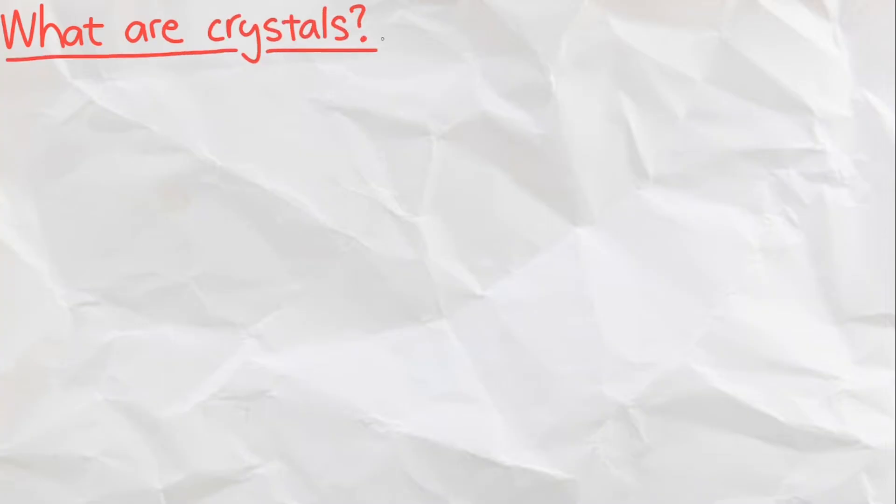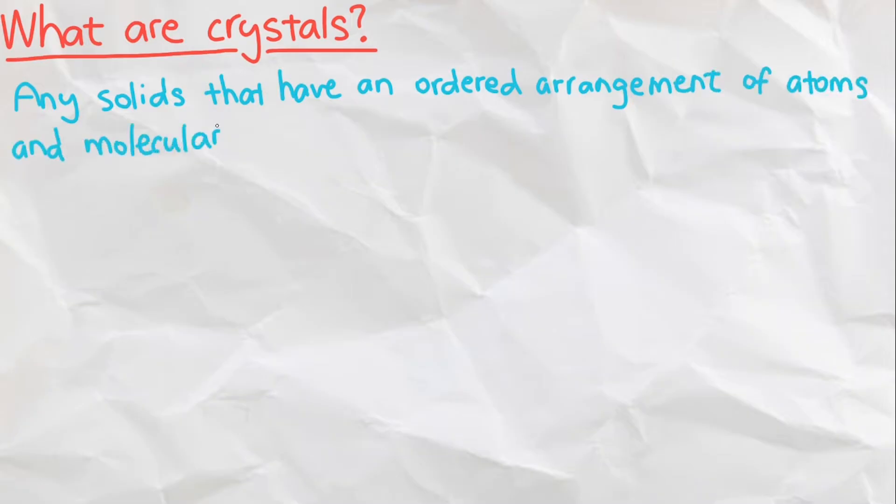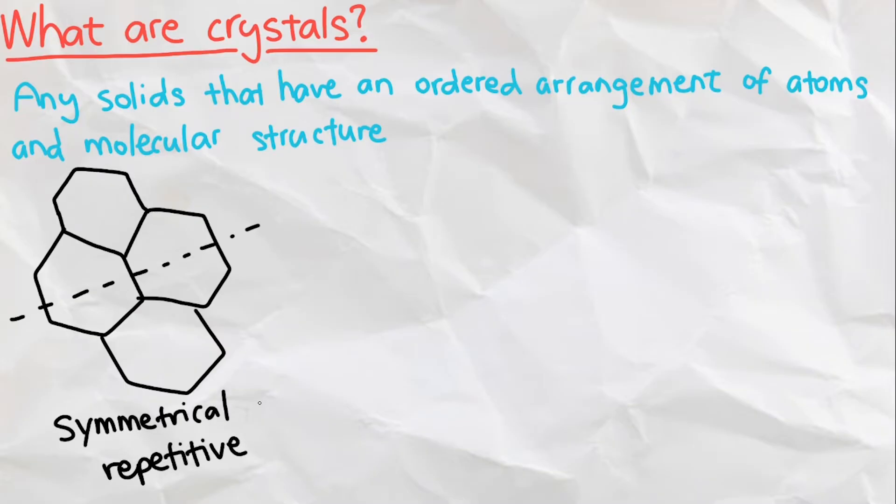Crystals refer to any solids that have an ordered arrangement of atoms and molecular structure, so we weren't just referring to the shiny rocks. The molecular structure of crystals are very repetitive, sometimes giving them a symmetrical and flat shape.